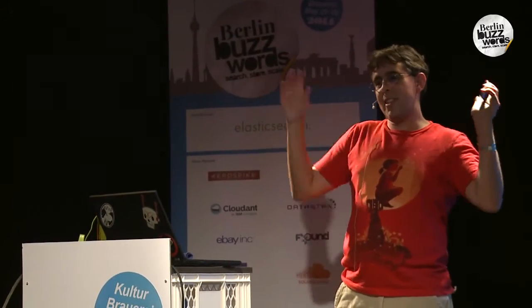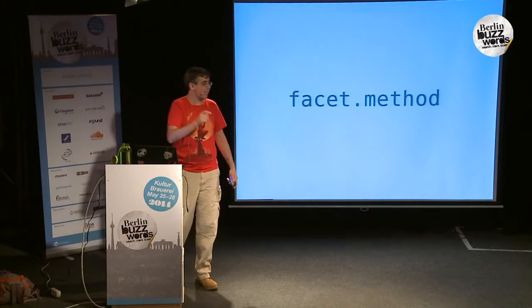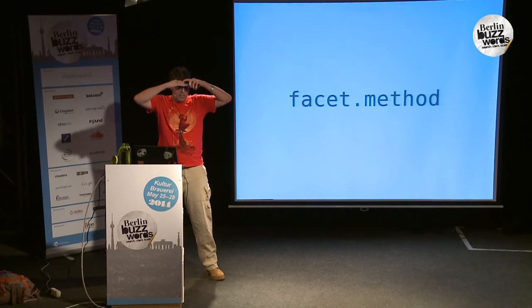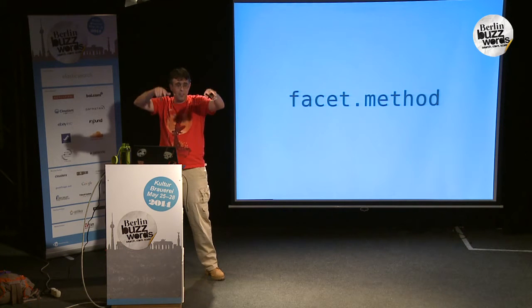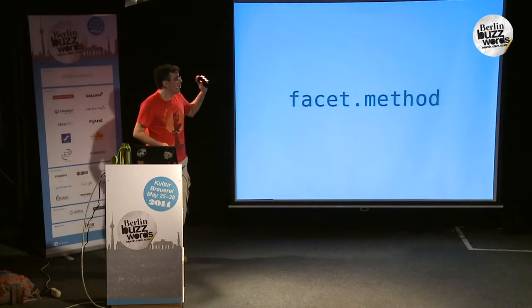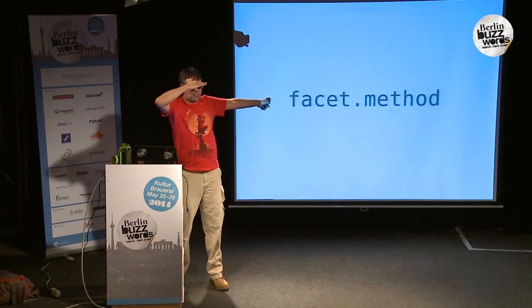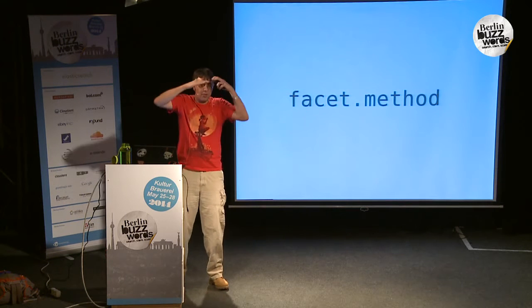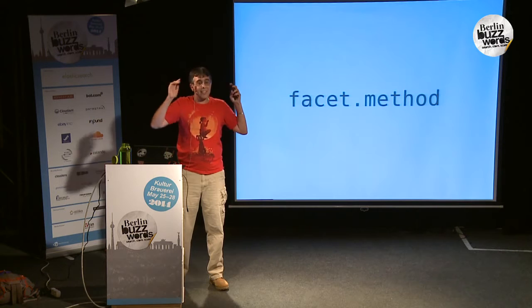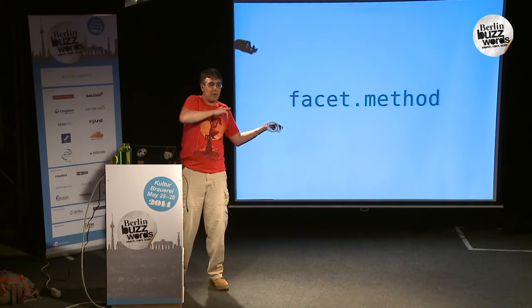Totally changing topics — facet method. Almost everyone here uses faceting in Solr. Very few people have configured the facet method parameter and changed it. Facet method controls the internal algorithm Solr uses to decide how to do your faceting. There are three different values. Two of them are very similar — they're called FC and FCS, which comes from the name 'field cache.' One is field cache and one is field cache per segment, which is a relatively newer concept in the history of Solr and Lucene.